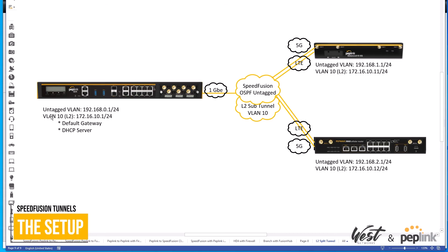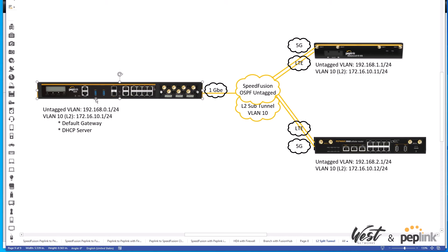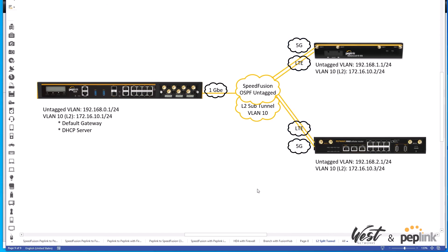The SDX will sit as our hub device — the root of that VLAN 10 network — with VLAN 10 at 172.16.10.1/24 as our default gateway and DHCP server. The remote sites will be VLAN 10 addresses 172.16.10.2 and 172.16.10.3, statically assigned. Each router has an untagged VLAN at 192.168.0.1 and .2. The hub device is connected via gigabit ethernet, while the two remote devices are connected via 5G and LTE — a 310 5G and an HD2 5G.